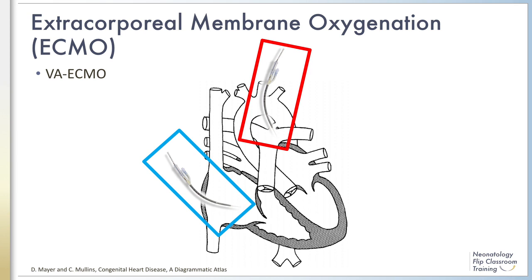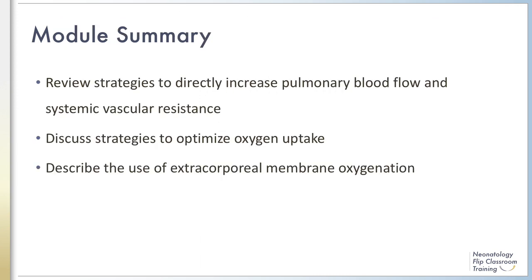In this module, we reviewed the management of PPHN from the framework of primary groups of strategies: directly promoting pulmonary blood flow, indirectly promoting pulmonary blood flow via increased systemic vascular resistance, and optimization of oxygen uptake. Finally, we described the indications and salient features of the use of ECMO in this population. This is the final module of our program on PPHN. Thank you for your attention.